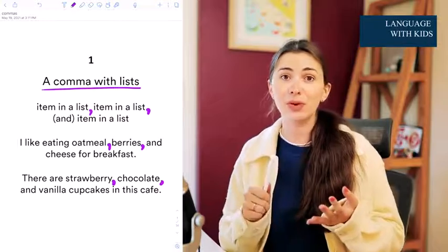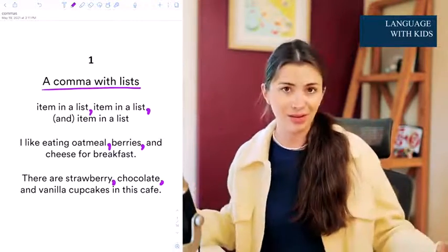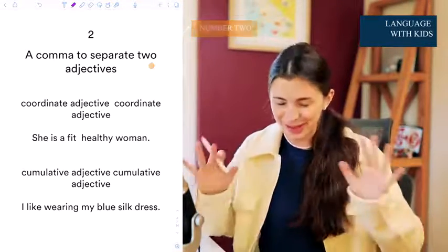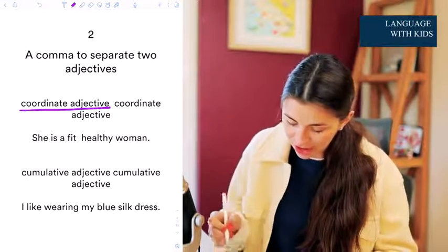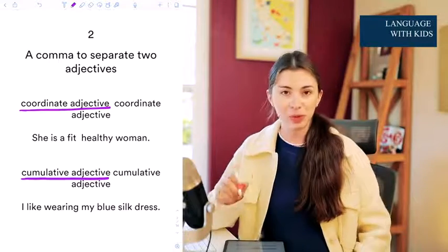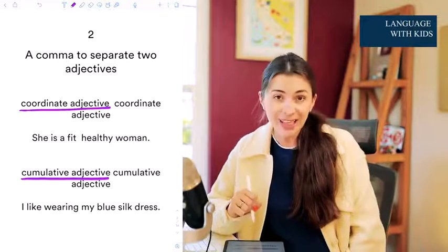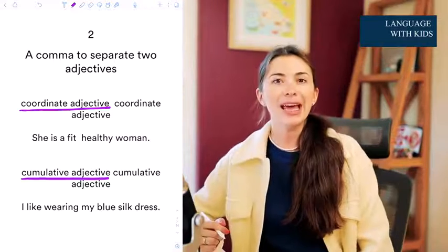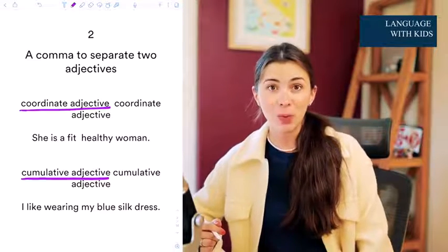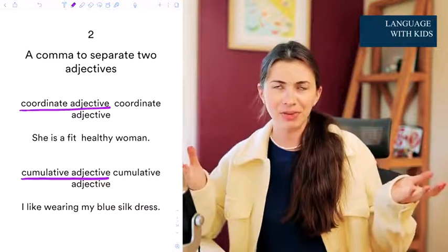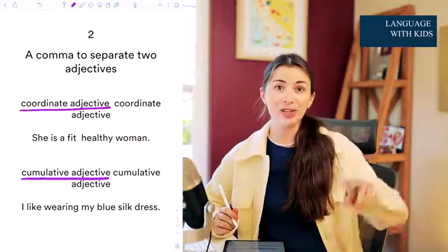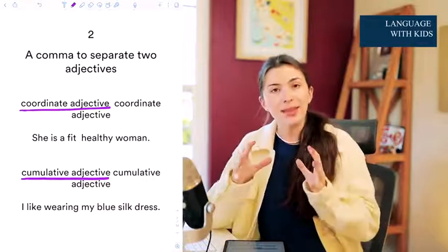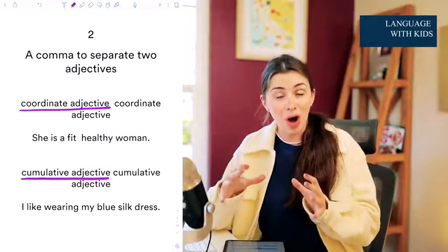The list could consist of nouns, adjectives, or adverbs depending on your list. There are two types of adjectives to understand — coordinate adjectives and cumulative adjectives. For coordinate adjectives: 'She is a fit, healthy woman.' Can we say 'she is a healthy fit woman'? Yes. Can we say 'she's healthy and fit woman'? Yes. If you can change their order and put 'and' between them and it still makes sense, then these are coordinate adjectives and you use a comma between them.